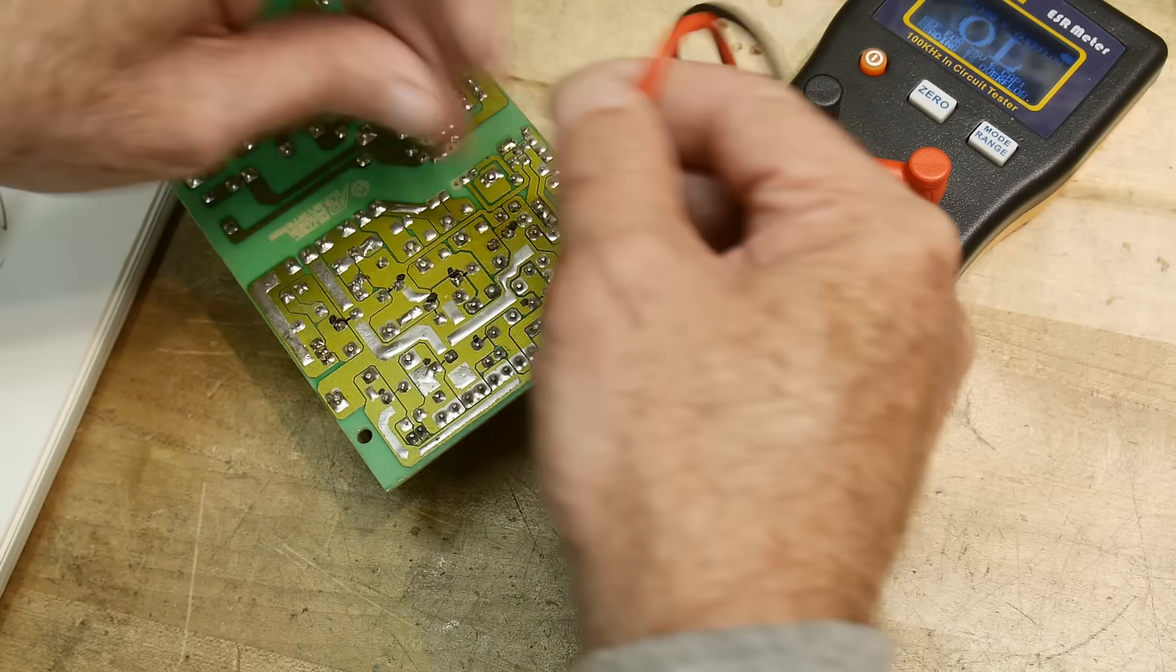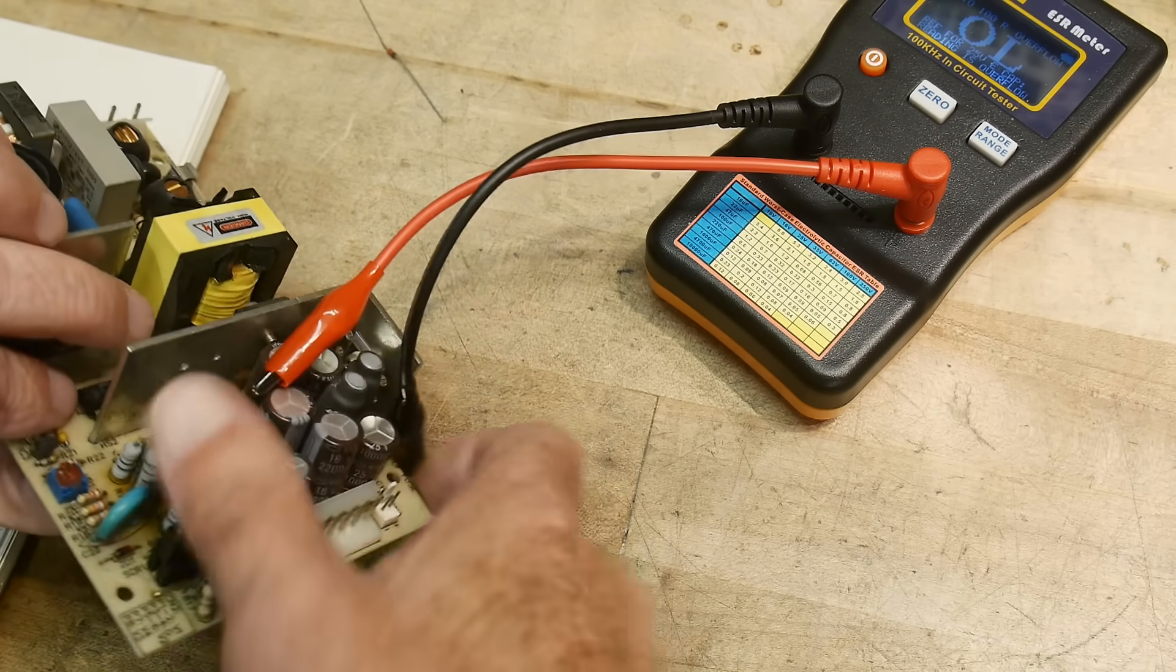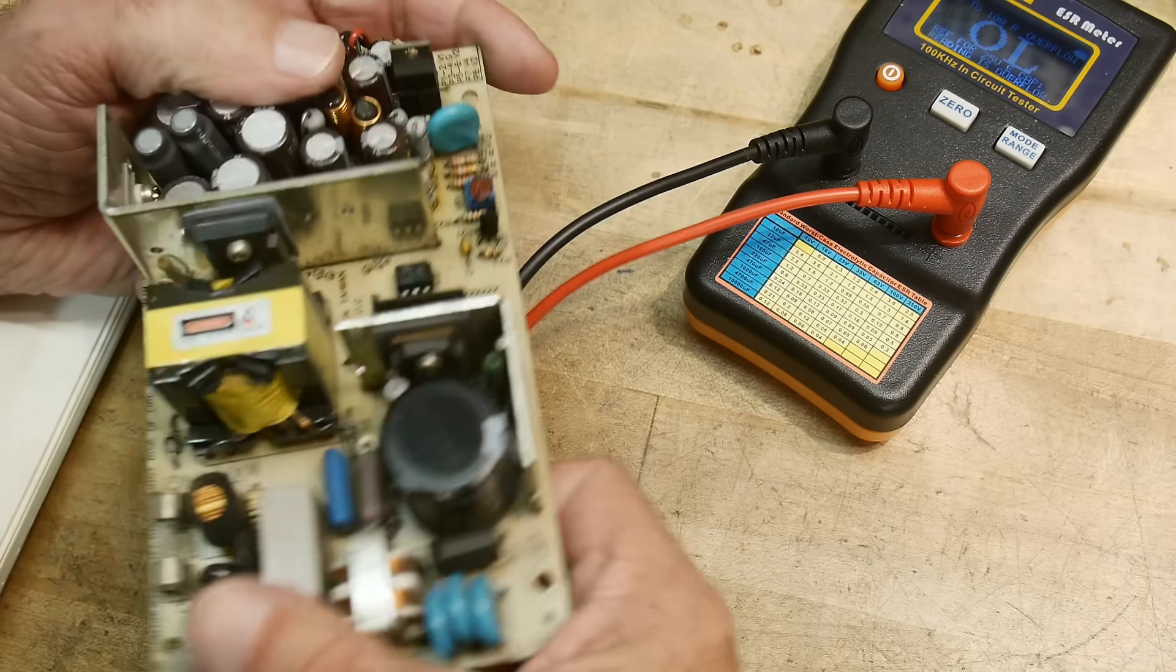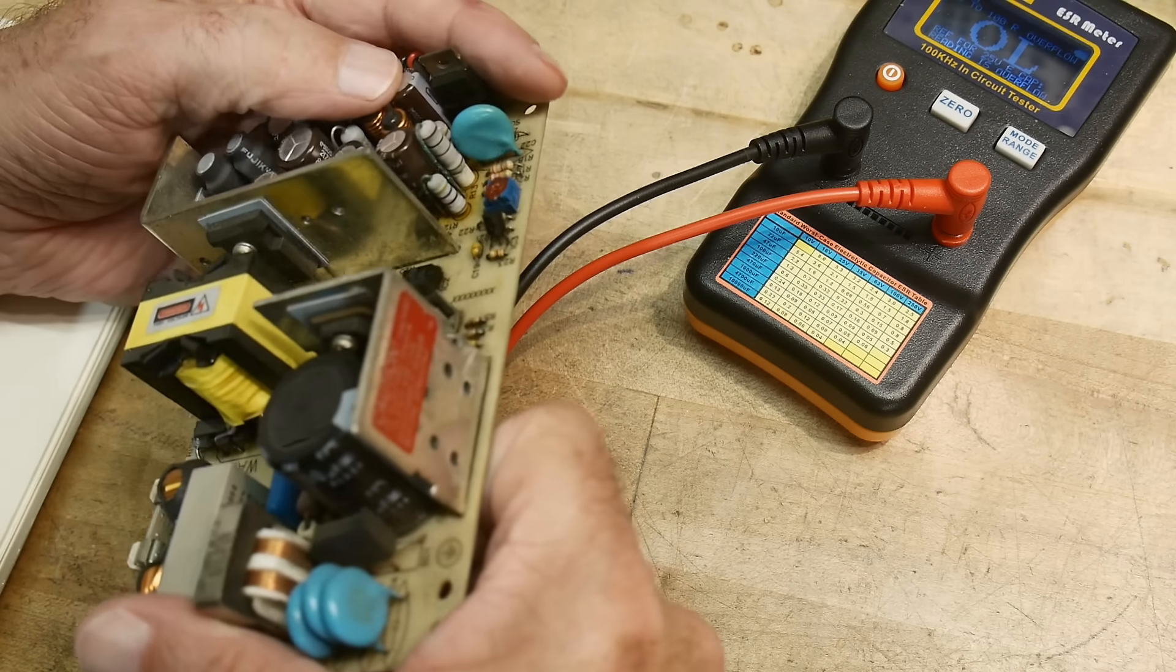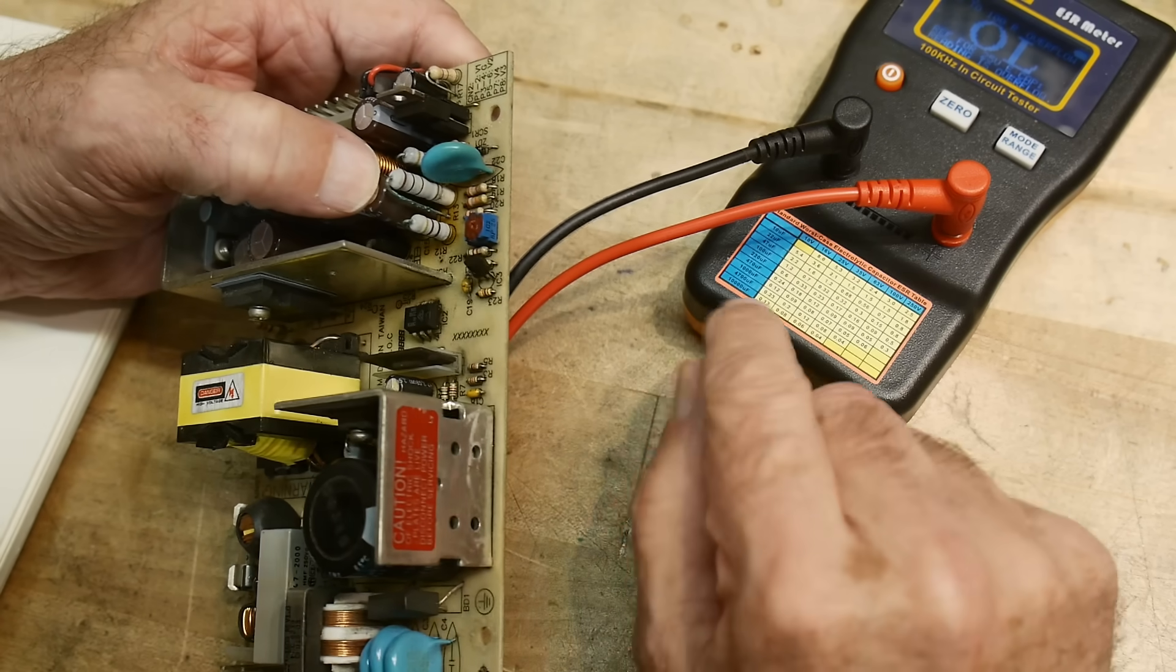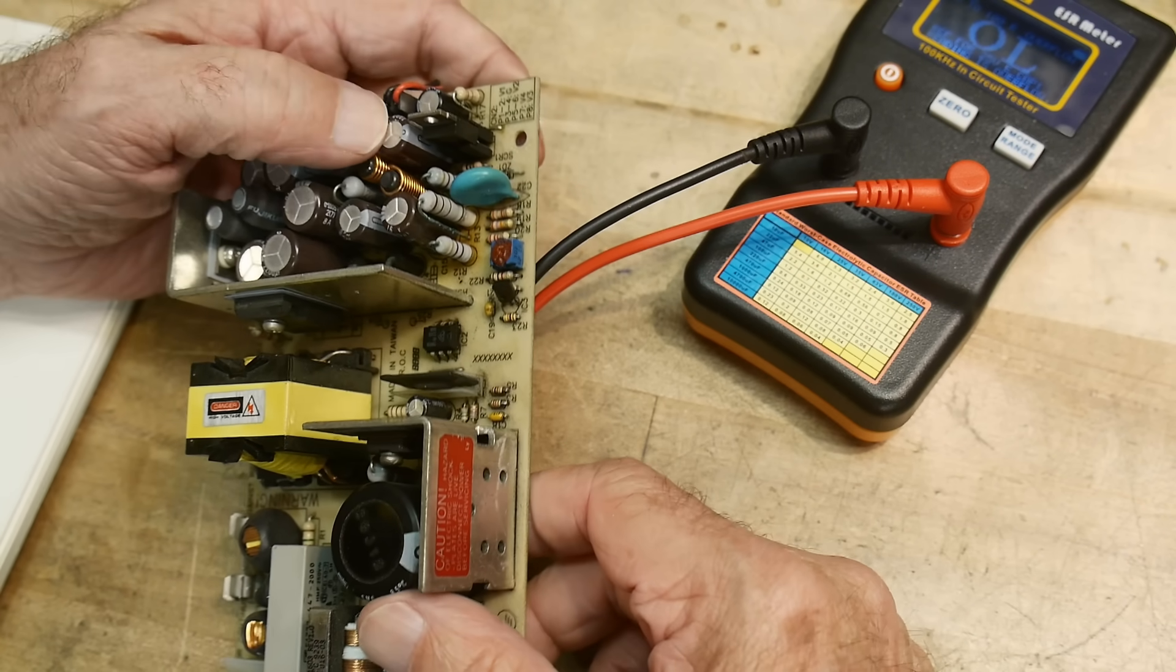Here's one here. Let's take a look at him. 0.4. Okay, so 0.4 is a little high. Let's take a look at what he is. He's here. Alright, and he is a thousand microfarad, so 0.4. Yeah, that's probably not a very good cap there.